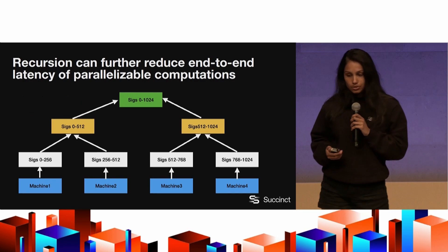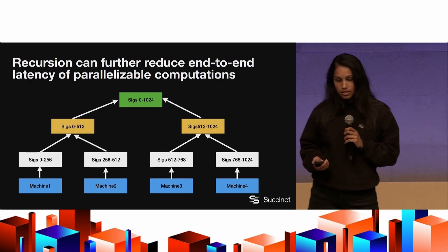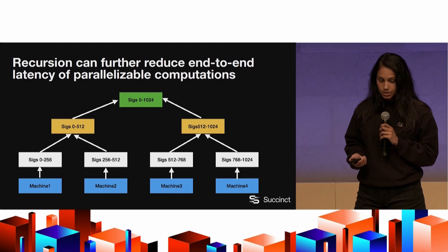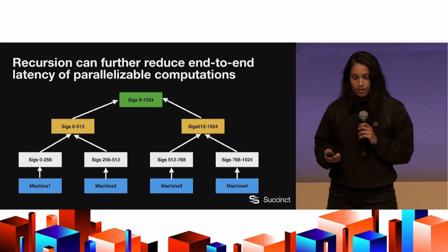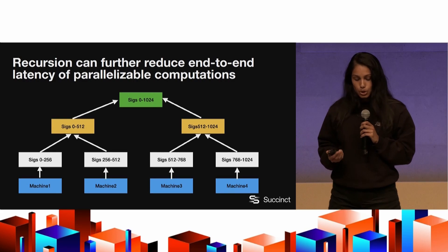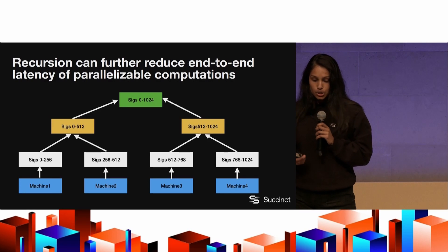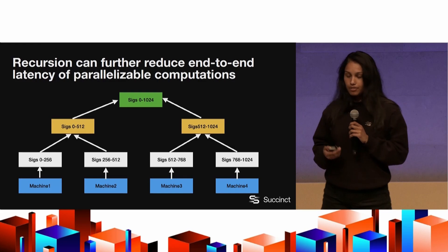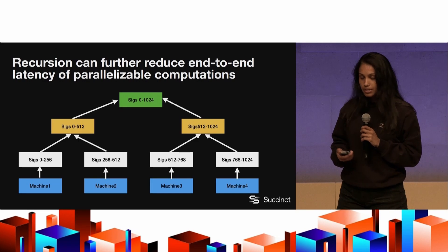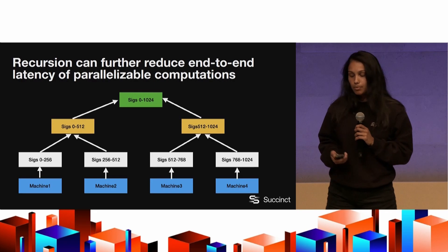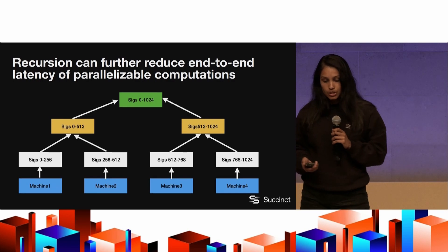You can further use recursion to reduce the end-to-end latency of these parallelizable computations. At each leaf of a tree, we verify a batch of signatures using our ZK SIMD abstraction, and verify each batch in parallel when verifying something like a thousand signatures. Each leaf is a Stark, and we recursively combine the verification of the Starks together in a tree-like structure. The end-to-end latency of the whole computation is simply the depth of the tree — log2 of the number of signatures we want to verify — greatly reducing latency even as we throw more compute at it.